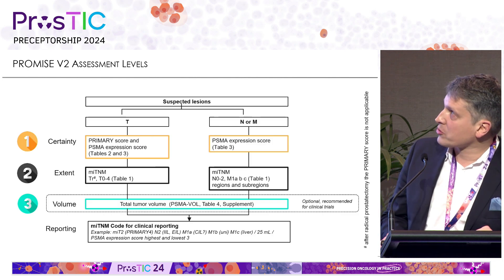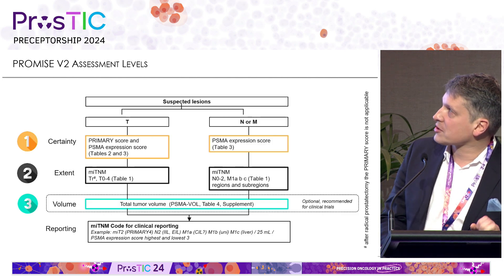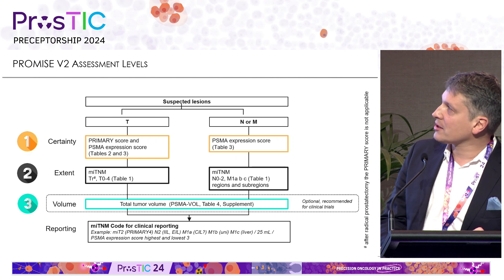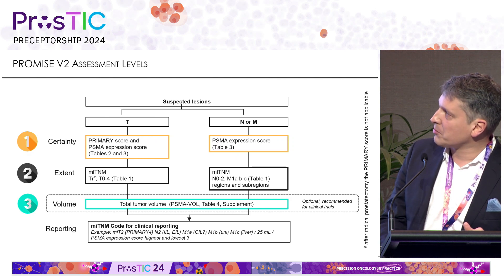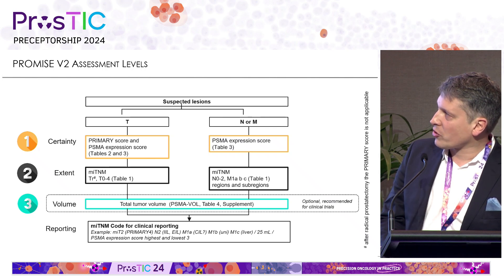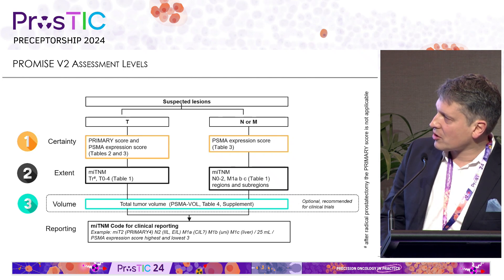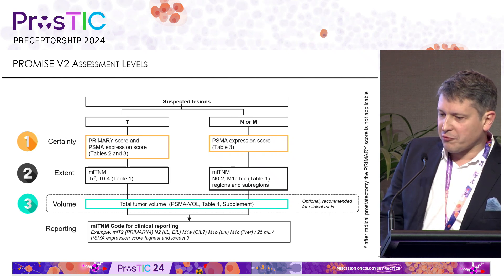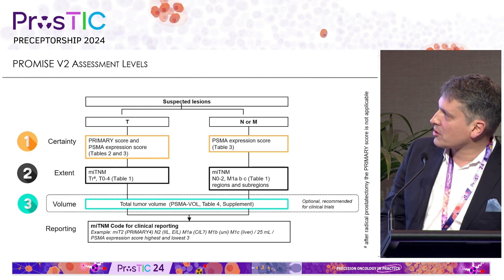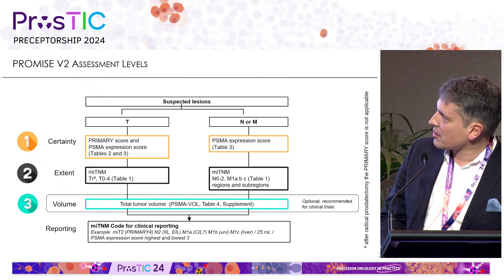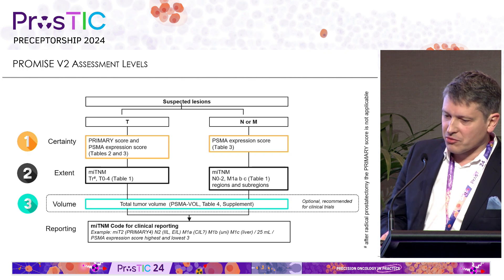What is proposed in the PROMIS criteria — focusing on the T score — we include first the lesion certainty using the primary score, then the PSMA expression score, then the extent of the lesion using the previous PROMIS criteria with some changes in the upgraded version, and we strongly suggest also including tumor volume. For N and M it is very similar: for certainty we use the PSMA expression score, for extent the MITNM, and all this together is relevant for tumor volume.